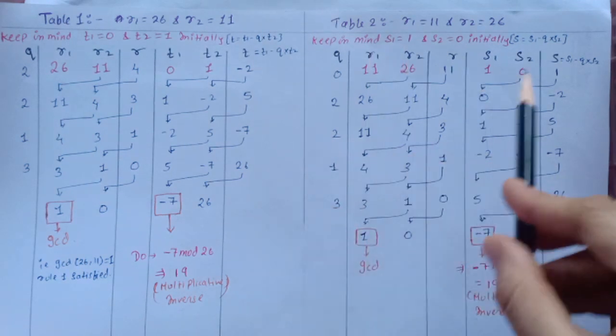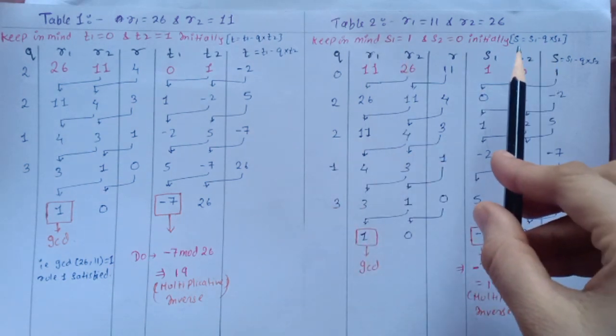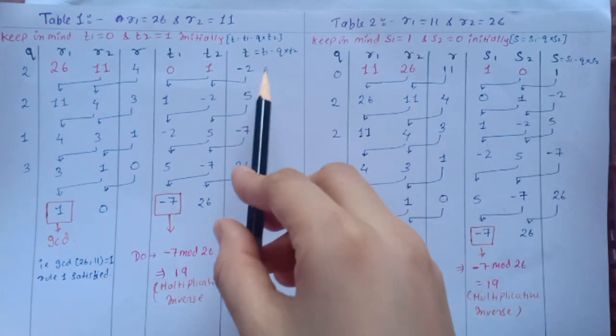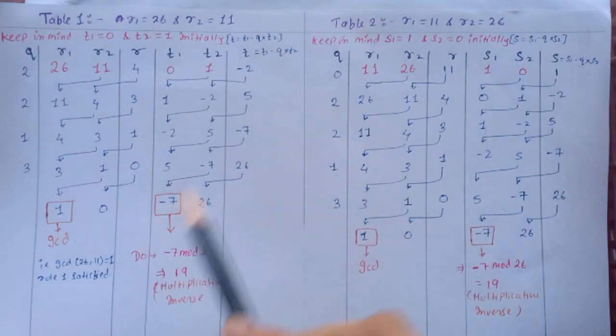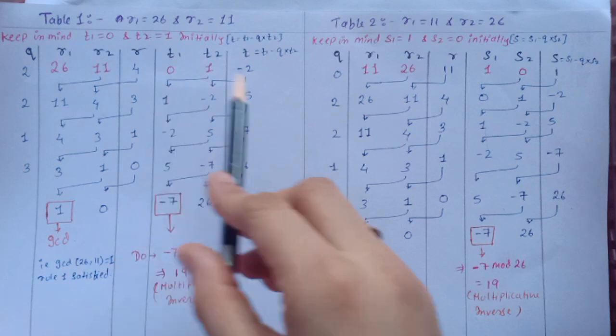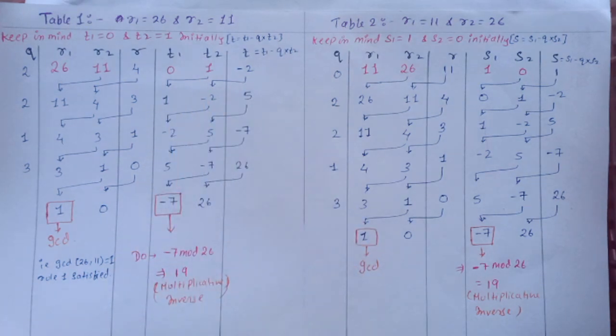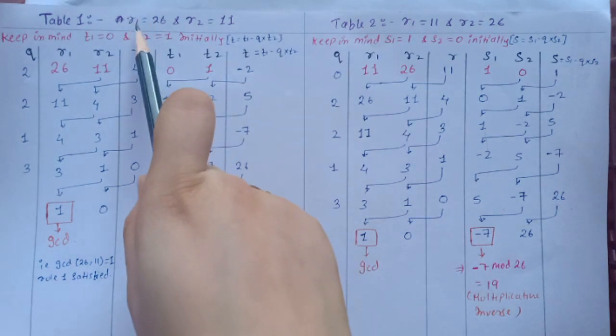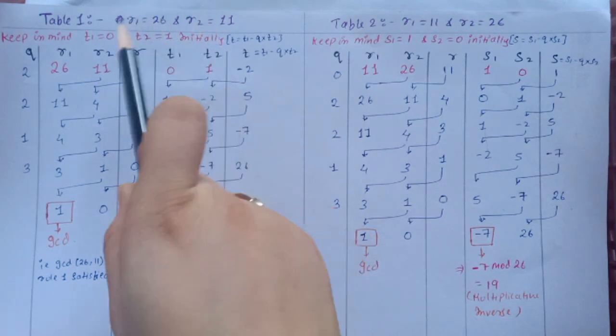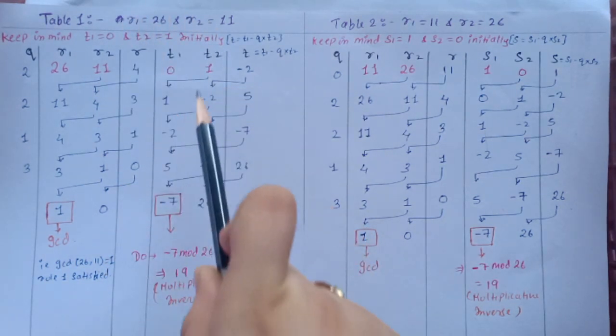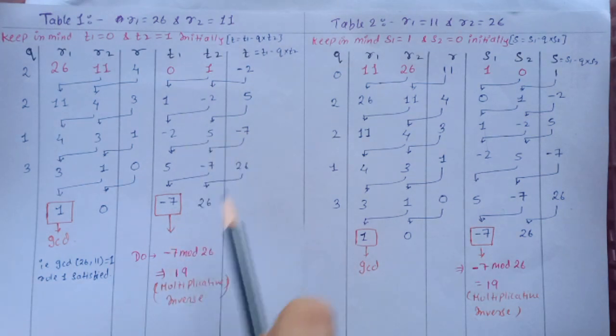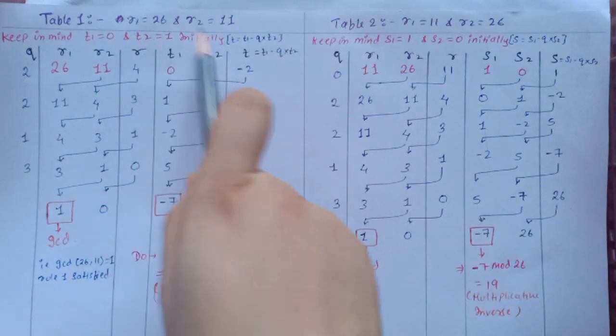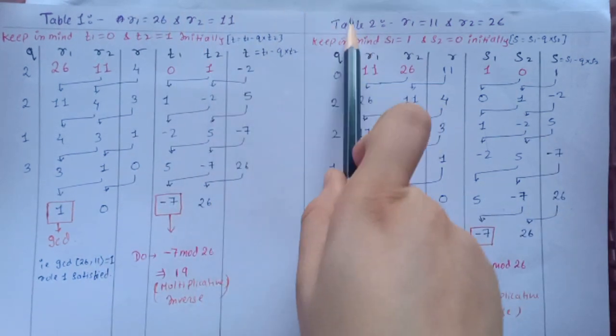And to calculate s, s is equal to s1 minus q into s2. Just follow the steps and do so. Here also this term shifts here, this term shifts here. So just don't confuse to take what is r1 and r2, because if you confuse this you have to solve t1, t2, t table also and s1, s2, and s table also. Just keep in mind these two things so you will be properly able to get the multiplicative inverse.